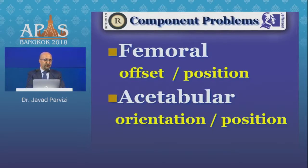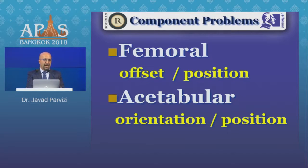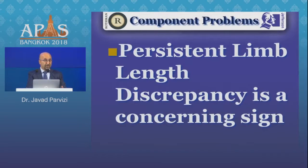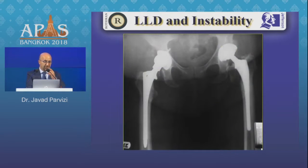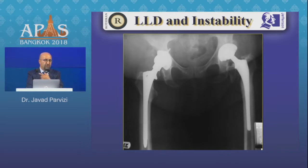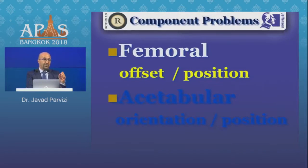When I see recurrent instability, I look at both the femoral and acetabular sides. On the femoral side, I want to see if the offset has been restored and if the position of the femoral component is normal. One telltale sign is limb length discrepancy — that's usually a concerning sign for instability, suggesting the surgeon encountered problems during surgery, such as vertical inclination, and tried to compensate with a skirted femoral head. That won't fix the problem; you need to reposition the acetabular component.